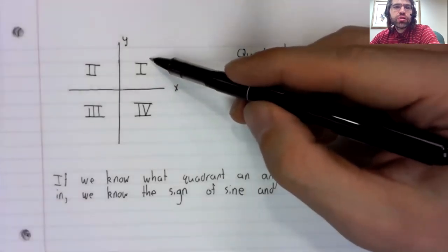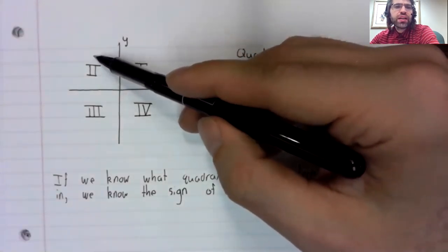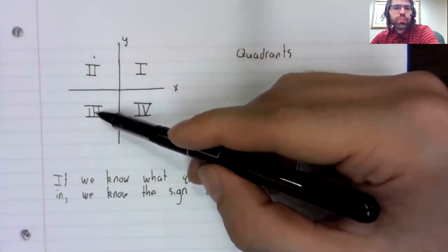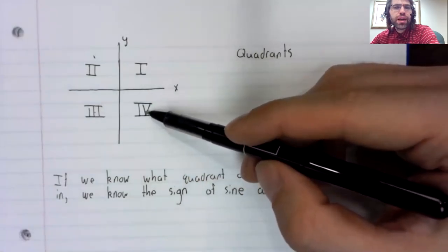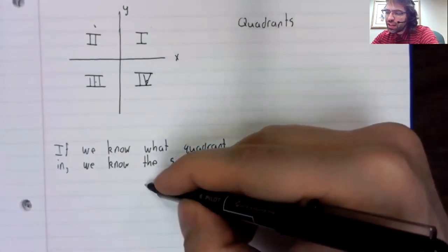In the first quadrant, x and y are both positive. In the second, y is positive, x is negative. In the third, they're both negative. In the fourth, x is positive, y is negative.